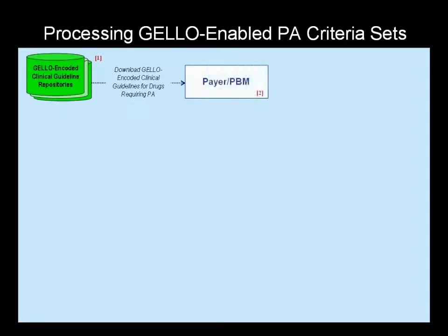This final section details the steps that involve the development, distribution, and processing of payer-specific prior authorization criteria sets. Payers and PBMs can now use the Jello-encoded clinical guidelines as templates for their customized PA criteria sets, applying their drug benefit plans to the guidelines, and adding payer-specific rules as appropriate.